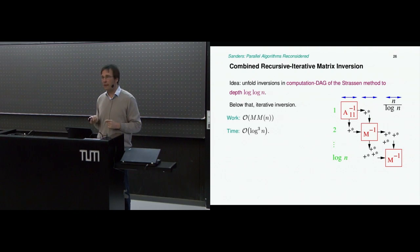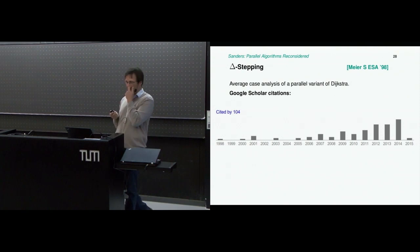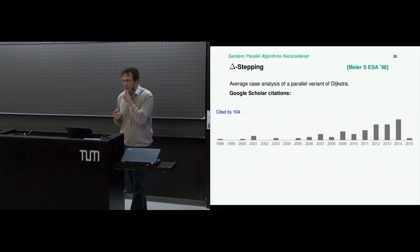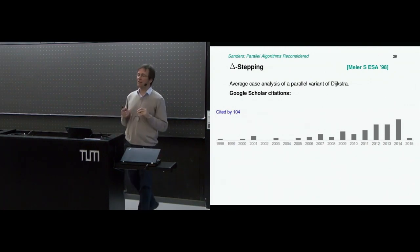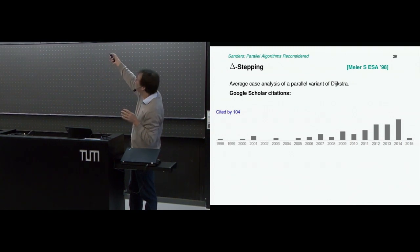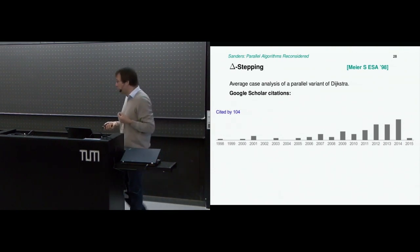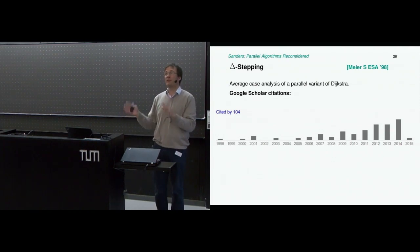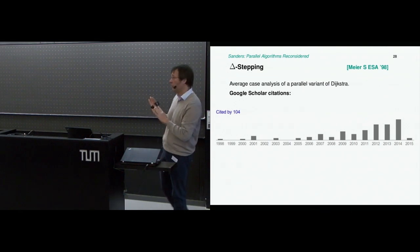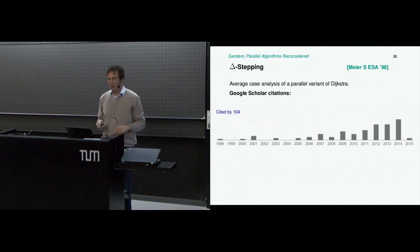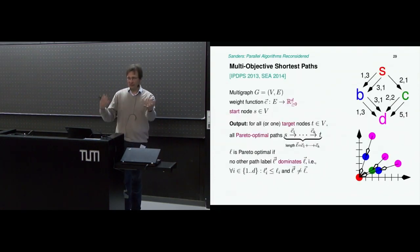Moving to graph algorithms. As an appetizer: an old result from 1998, looking at average-case analysis of a parallel variant of Dijkstra's algorithm. The paper was published just when the area was already dead, and the paper was also dead—but since 2007, people started citing it again. It's used in particular in the most popular benchmark for graph processing, the Graph 500 benchmark. They use mostly BFS, but also ask you to do shortest path; on the graphs they use, this algorithm works great, so everybody uses it—but with a 10-year delay.